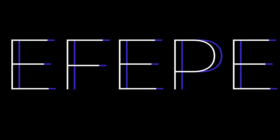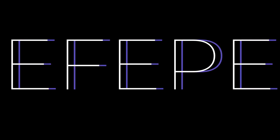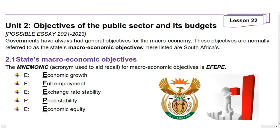Cardin came up with EFEPE, which is a mnemonic for macroeconomic objectives — it will definitely help you in the exam. E stands for Economic Growth, F stands for Full Employment, E stands for Exchange Rate Stability, P stands for Price Stability, and E stands for Economic Equity.